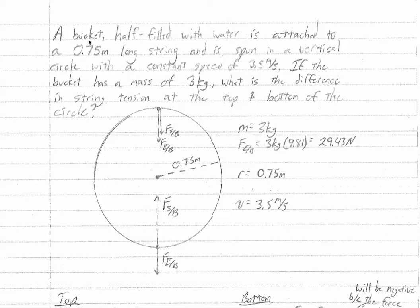On the problem it says: a bucket half filled with water is attached to a 0.75 meter long string and is spun in a vertical circle with a constant speed of 3.5 meters per second. If the bucket has a mass of 3 kilograms, what is the difference in string tension at the top and bottom of the circle?